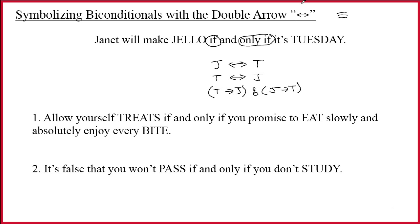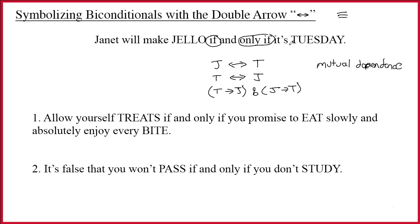Before looking at the actual sentences, let's talk about what 'if and only if' means. When you write j double arrow t, you're not saying j equals t. The best way to think about it is mutual dependence — that making jello depends on its being Tuesday, and Tuesday depends on making jello. It seems a little odd to say being Tuesday depends on making jello, but the sentence asserts a dependency between these two events.